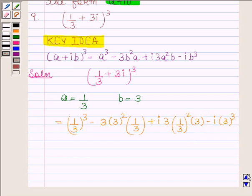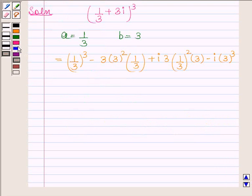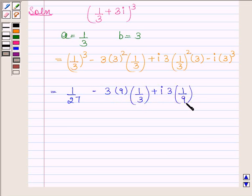And this is equal to 1 by 27 minus 3 into 9 into 1 by 3 plus iota into 3 into 1 by 9 into 3 minus iota into 27.